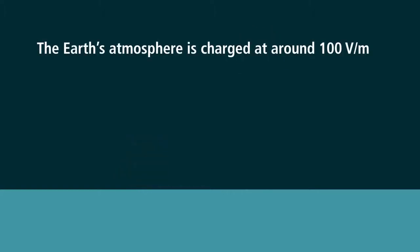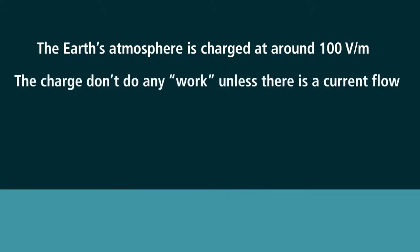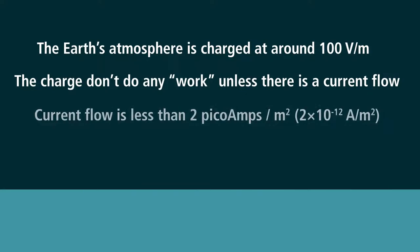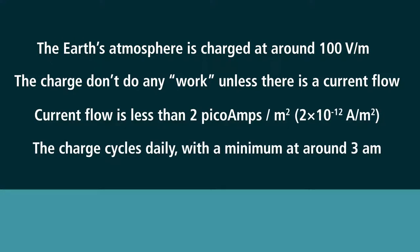True enough, the Earth's atmosphere is charged at around 100 volts per meter, but a charge won't do anything unless there is some electrical current flowing. The current flow in the atmosphere is so minuscule it has no meaningful effect at all. Besides, the charge in the atmosphere fluctuates daily, with an absolute minimum around 3 am.